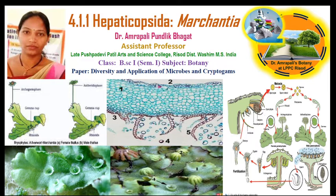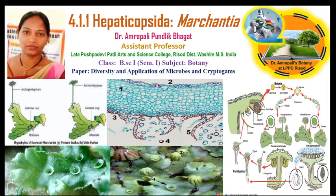Here is the thallus structure of a Marchantia. This is the archegoniophore, also called the female thallus, and this is the antheridiophore, called the male thallus. Here is the vegetative structure or thallus lamina of a Marchantia, which shows a gemma cup. Here is the archegoniophore and antheridiophore.